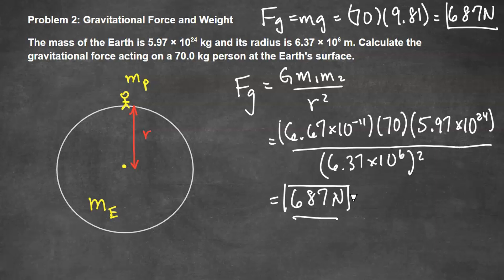Why use the universal version at all? If you know the gravitational field strength (little g), you can use Fg equals mg. But if you're on a different planet and don't know little g, or if you're looking at the gravitational force between two arbitrary objects — like two bowling balls — then you must use the universal version of the equation.